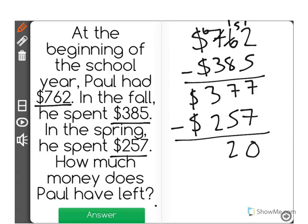So that leaves him with $120, and since the question is asking how much money does Paul have left after spending the $257 in the spring, our answer is $120.